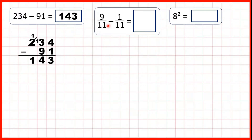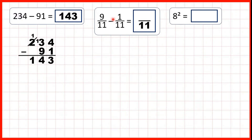Here, we need to subtract fractions. And we have denominators that are the same. So, in our answer, we keep the denominators the same and just subtract the numerators. 9 minus 1 is 8. So, our answer is 8 elevenths.